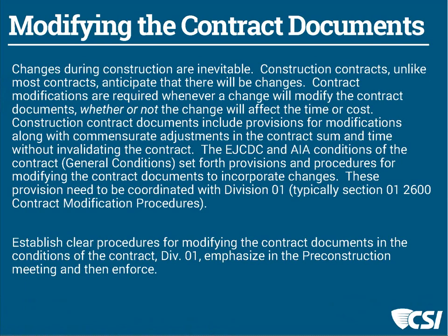We need to make the appropriate adjustments in the contract documents as we progress through the project. EJCDC documents and AIA documents specifically spell out how we do that. The most important thing is going back to your contract documents with your client and specifications — typically in Division 1 — that explain the process of modifying the contract, and sticking with that modification process precisely and exactly.